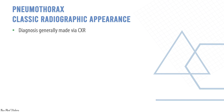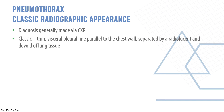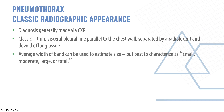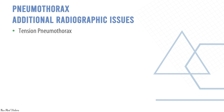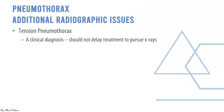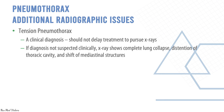Diagnosis is generally made by chest X-ray. Classic findings include a thin visceral pleural line parallel to the chest wall, separated by a radiolucent area devoid of lung tissue. The average band width can be used to estimate size, but it's best characterized as small, moderate, large, or total. Size is important for treatment decisions. For tension pneumothorax, clinical diagnosis should not delay treatment to pursue X-rays. If suspected clinically, X-rays show complete lung collapse, distension of the thoracic cavity, and shift of mediastinal structures.